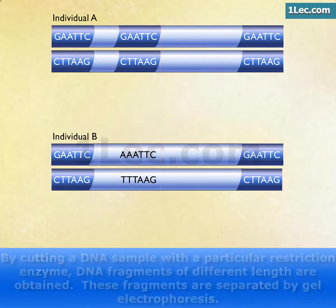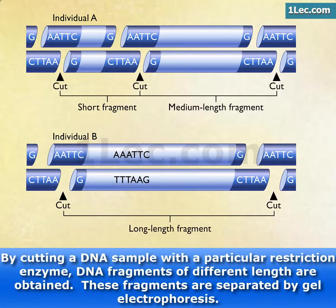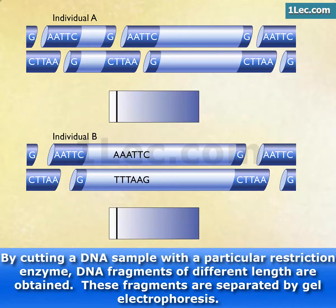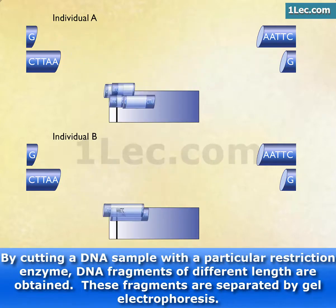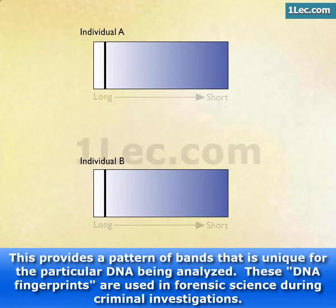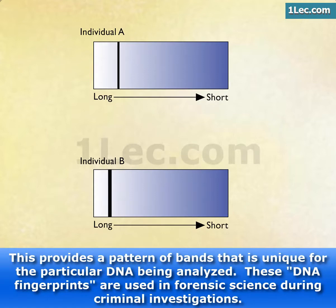By cutting a DNA sample with a particular restriction enzyme, DNA fragments of different length are obtained. These fragments are separated by gel electrophoresis, which provides a pattern of bands that is unique for the particular DNA being analyzed.